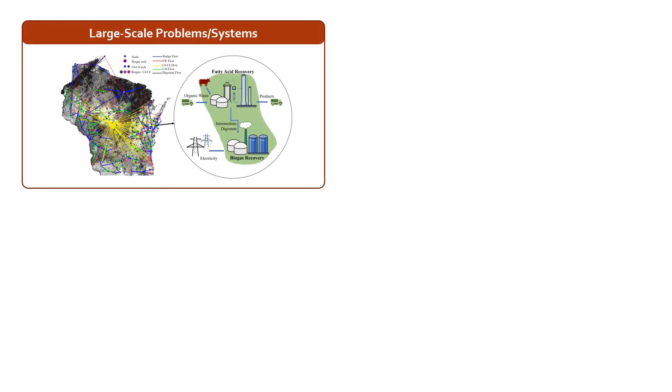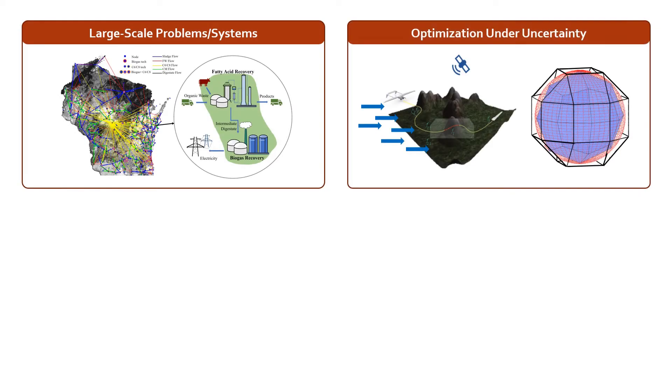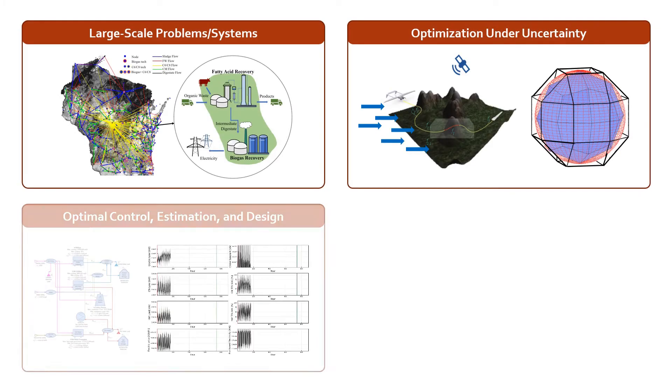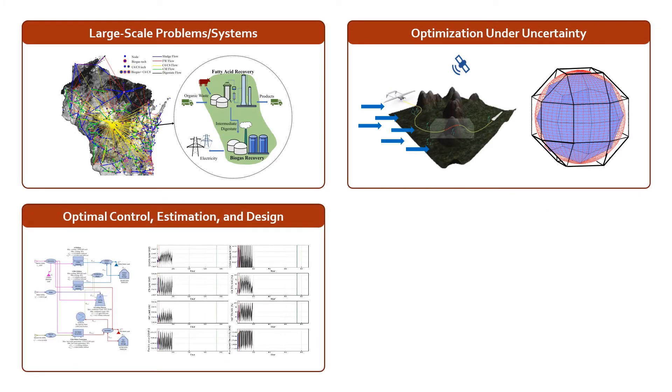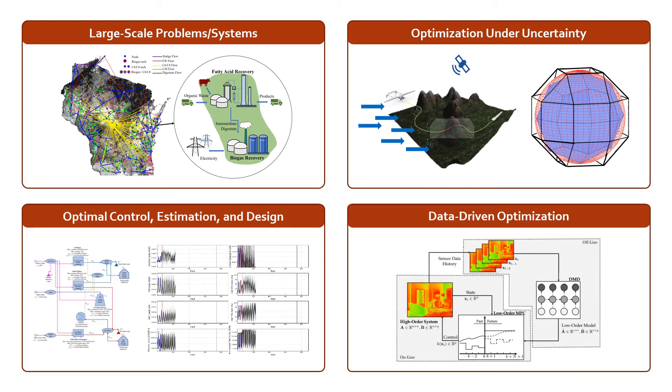We can categorize our research under large-scale systems, optimization under uncertainty, control estimation and design, and, of course, data-driven optimization.